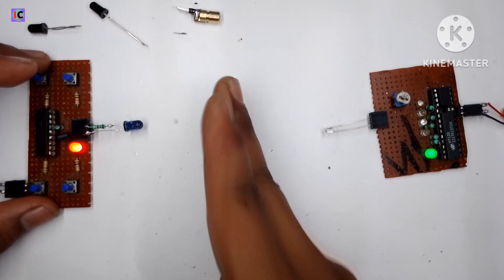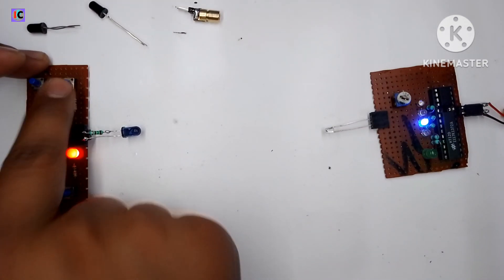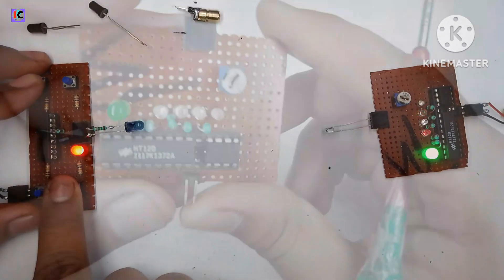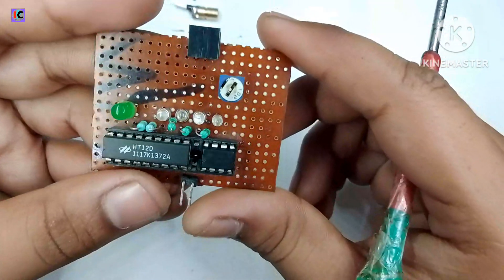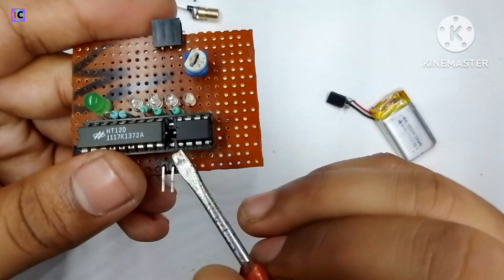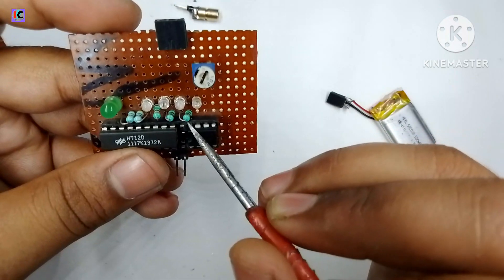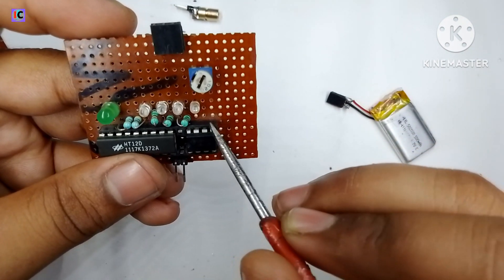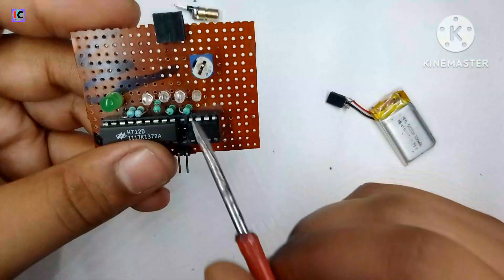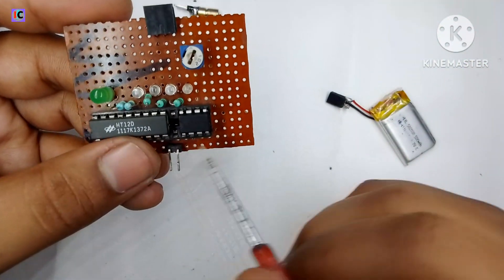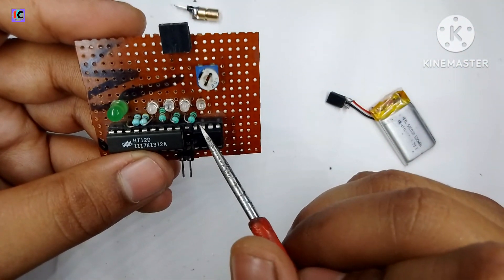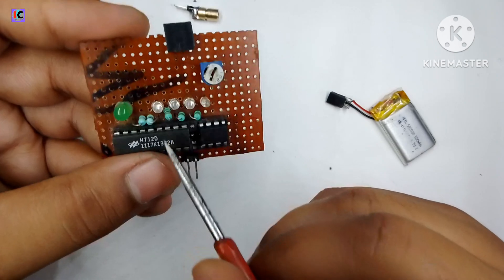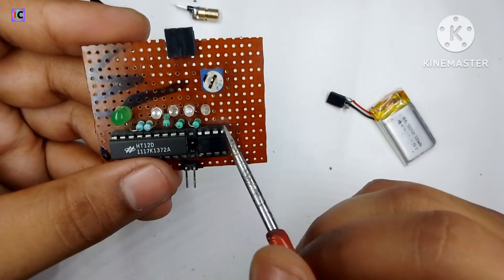If we look at the circuit diagram in the receiver section we have a HT12D decoder IC and LM358. I have used pin number 7 of the LM358 as output and the output pin which is pin number 7 is connected at the data input pin of the HT12D IC.